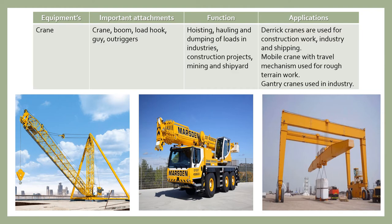There are three types of cranes: the first is the derrick crane, used for construction work, industry, and shipping purposes; the second is the mobile crane, which has a travel mechanism used for rough terrain work; and the third is the gantry crane, used in industry. With this, we have completed the introduction of 13 types of heavy earth moving machines, covering their applications, functions, and important attachments.